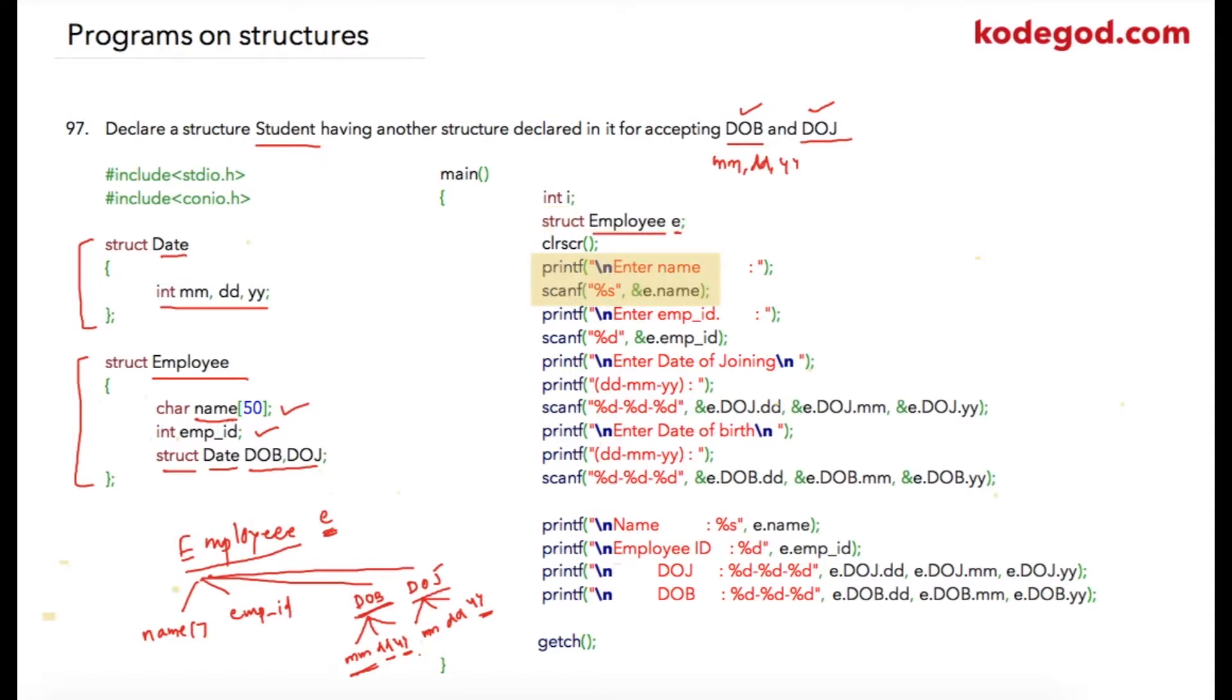Then I am asking user to enter name, which I am going to store in e.name. After that I am asking user to enter employee ID, which will be stored into e.emp_id. Then I am asking user to enter date of joining, and I am also suggesting the format. Notice that inside of scanf statement I have %d dash %d dash %d.